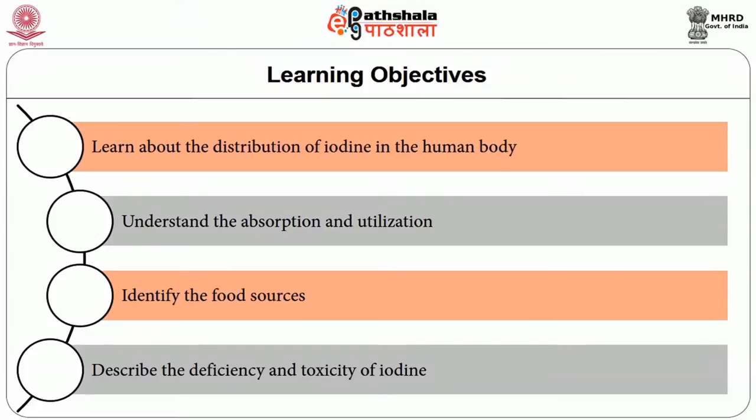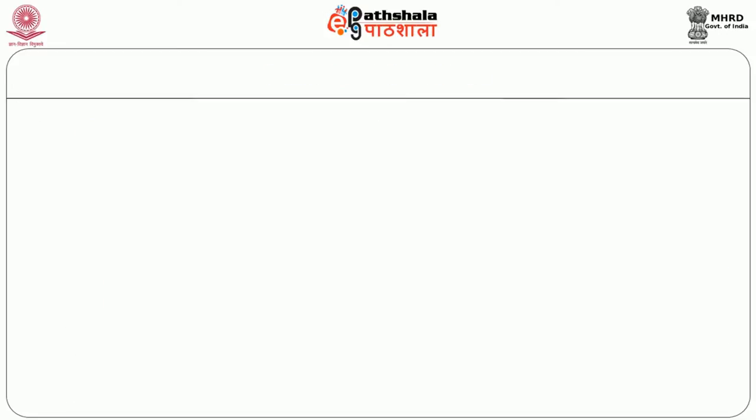T3 and T4 monitor the rate of energy metabolism in the body and thus are essential for growth and development. After reading this episode, you will be able to learn about the distribution of iodine in the human body, understand its absorption and utilization, identify food sources, and describe the deficiency and toxicity of iodine.